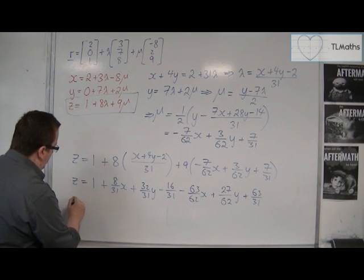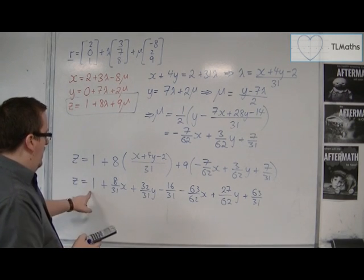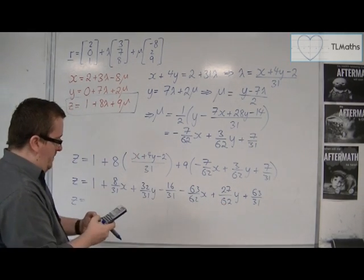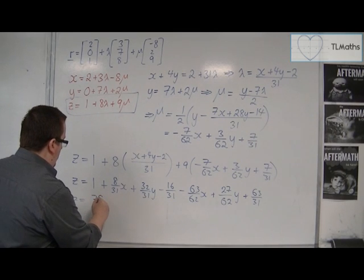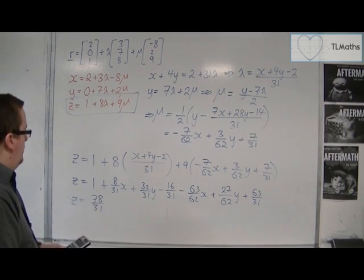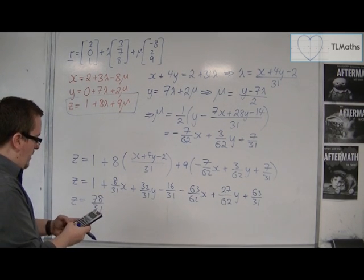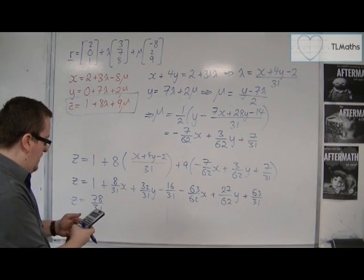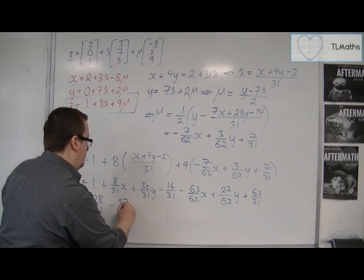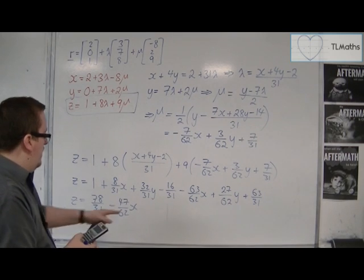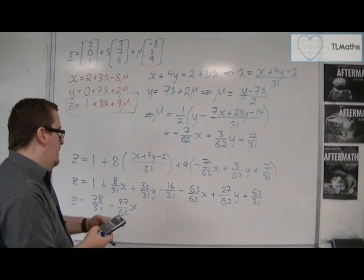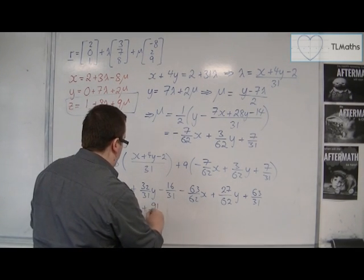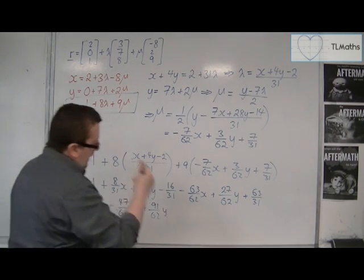Simplifying: z equals — for the constant, 1 minus 16/31 plus 63/31 gives 78/31. For the x terms, 8/31 minus 63/62 gives minus 47/62 times x. For the y terms, 32/31 plus 27/62 gives 91/62 times y. So z equals 78/31 minus (47/62)x plus (91/62)y.